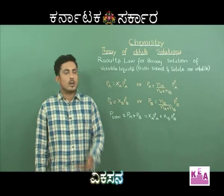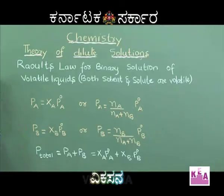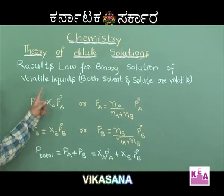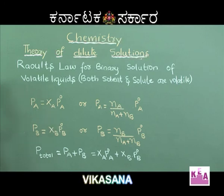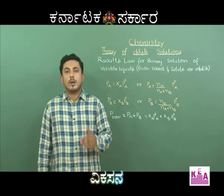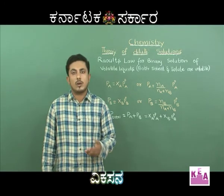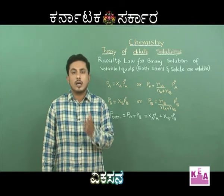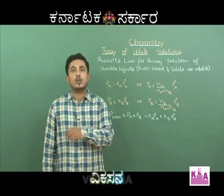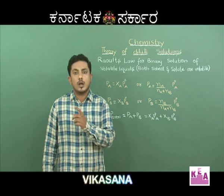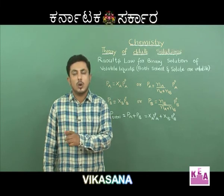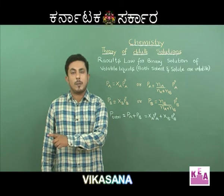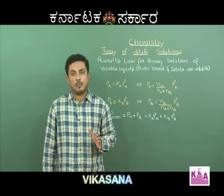Let us discuss Raoult's law for a binary solution of volatile liquids in which both solute and solvent are volatile. According to Raoult's law, in a binary solution, the partial pressure of a component is equal to the mole fraction of that component multiplied by the vapour pressure of that component in its pure form.